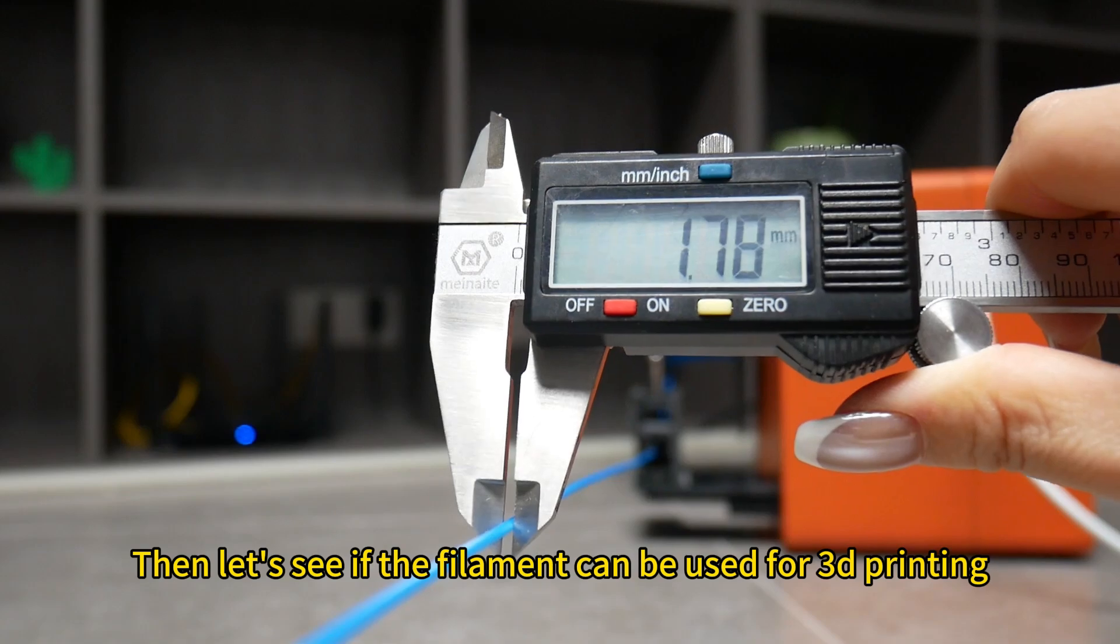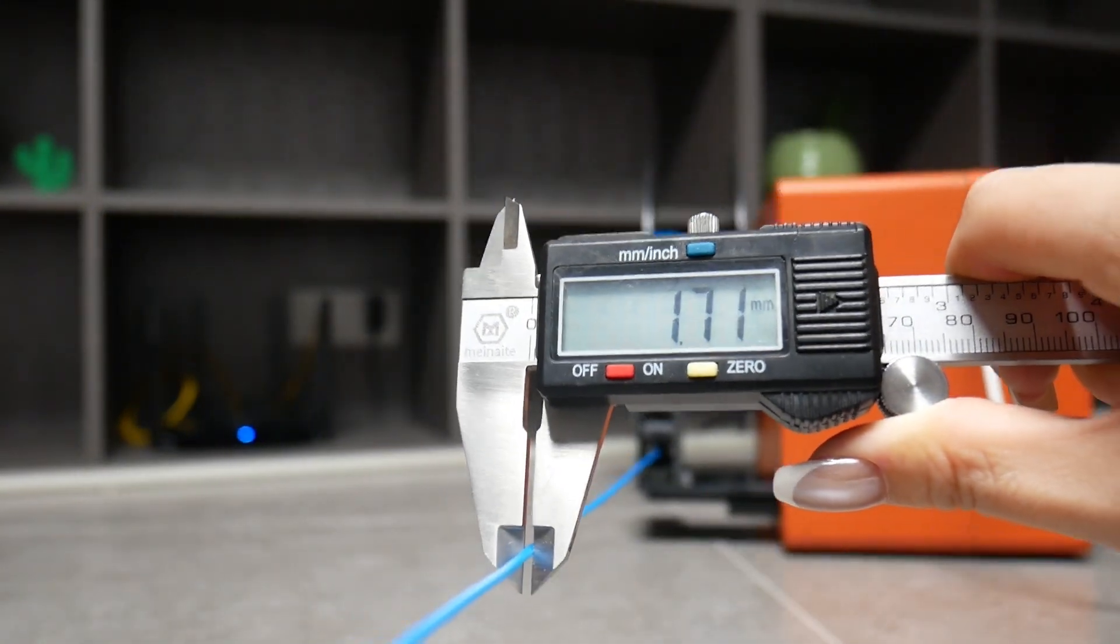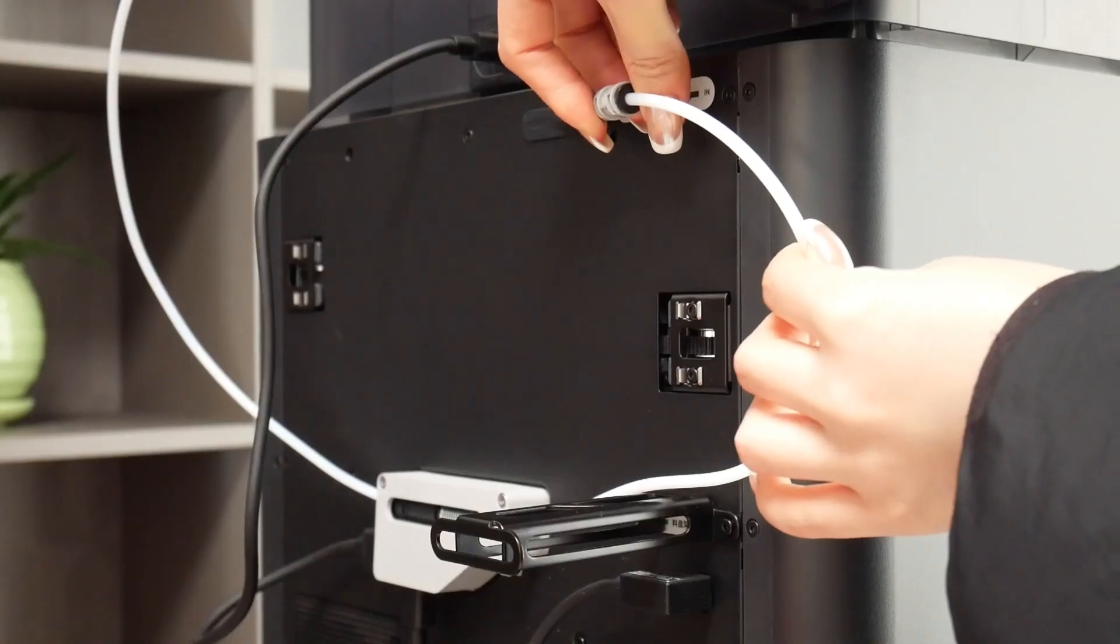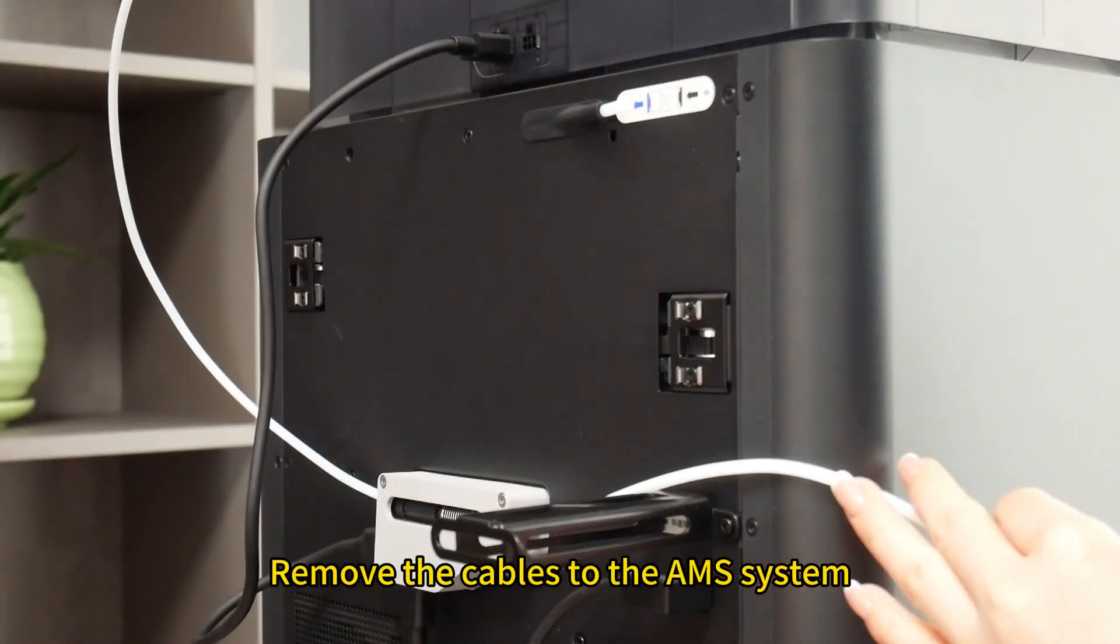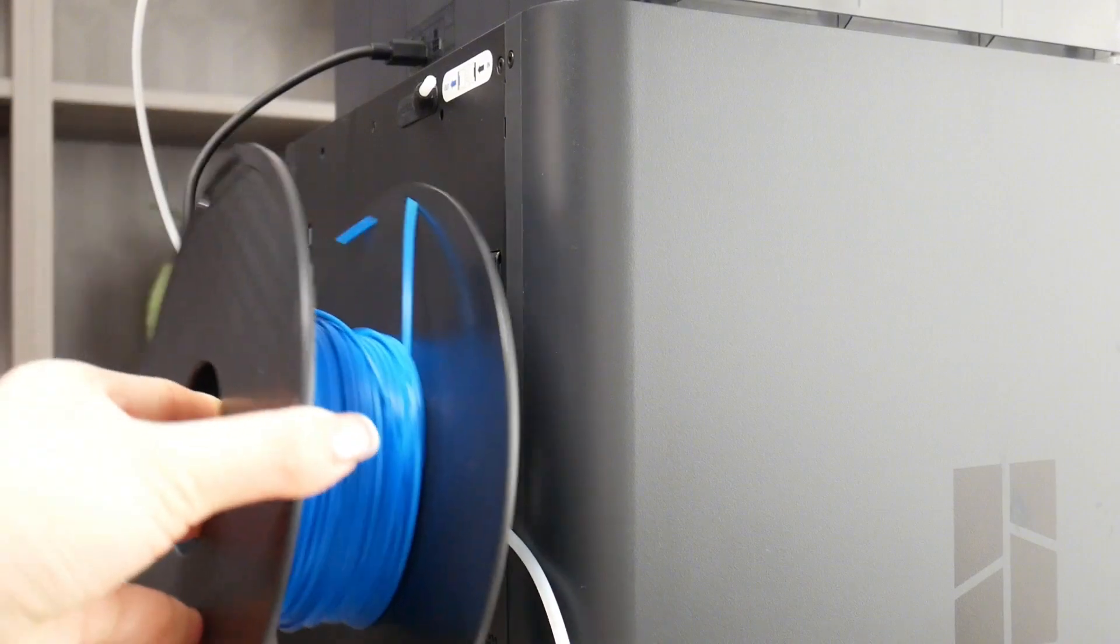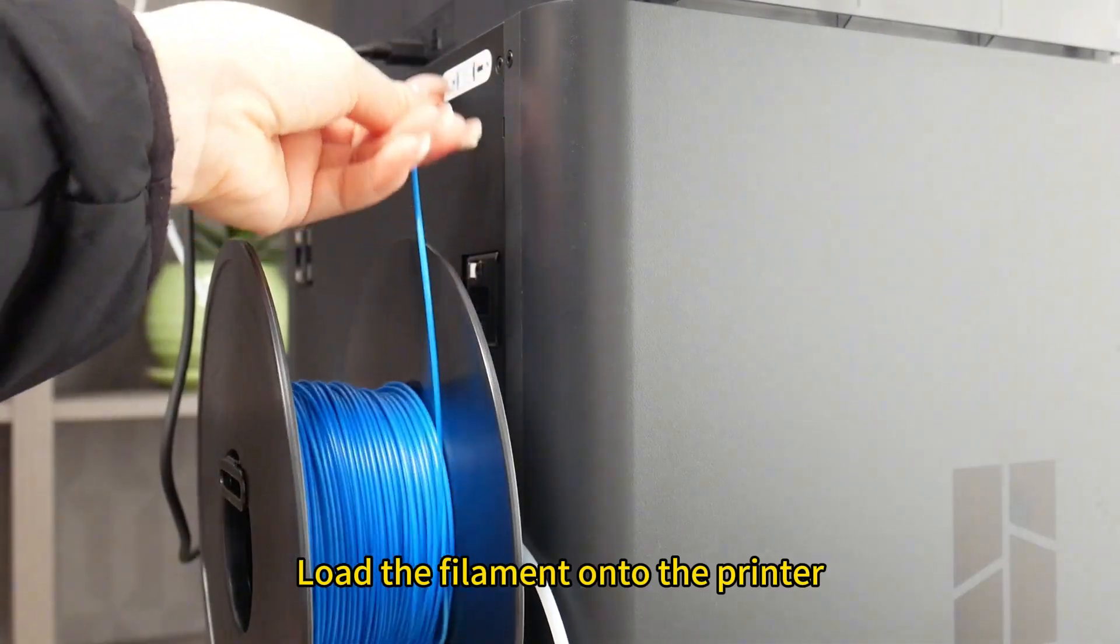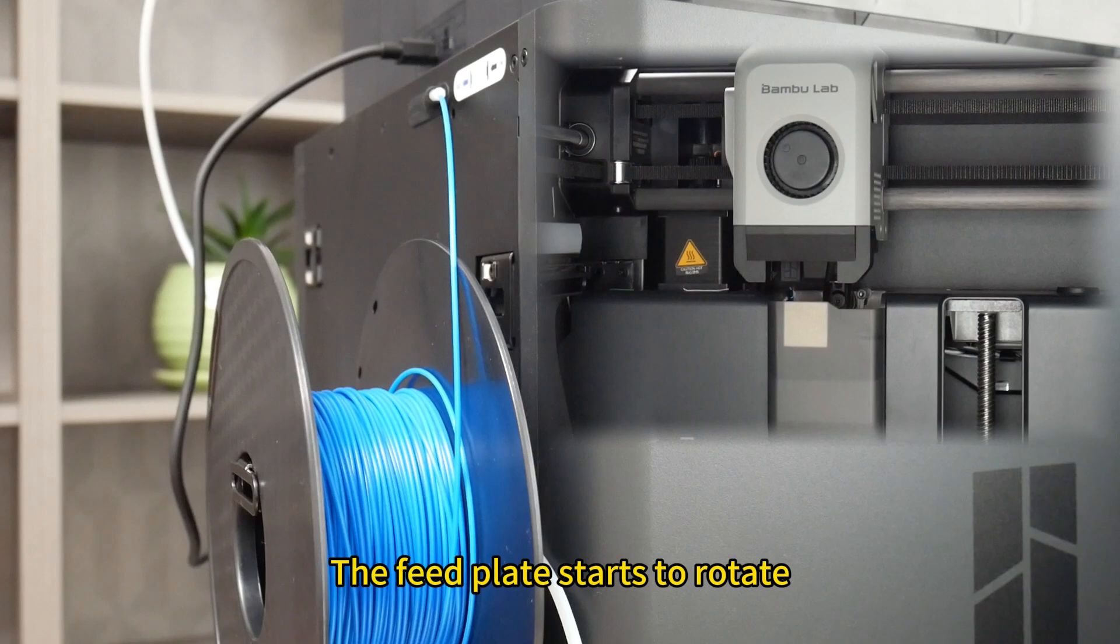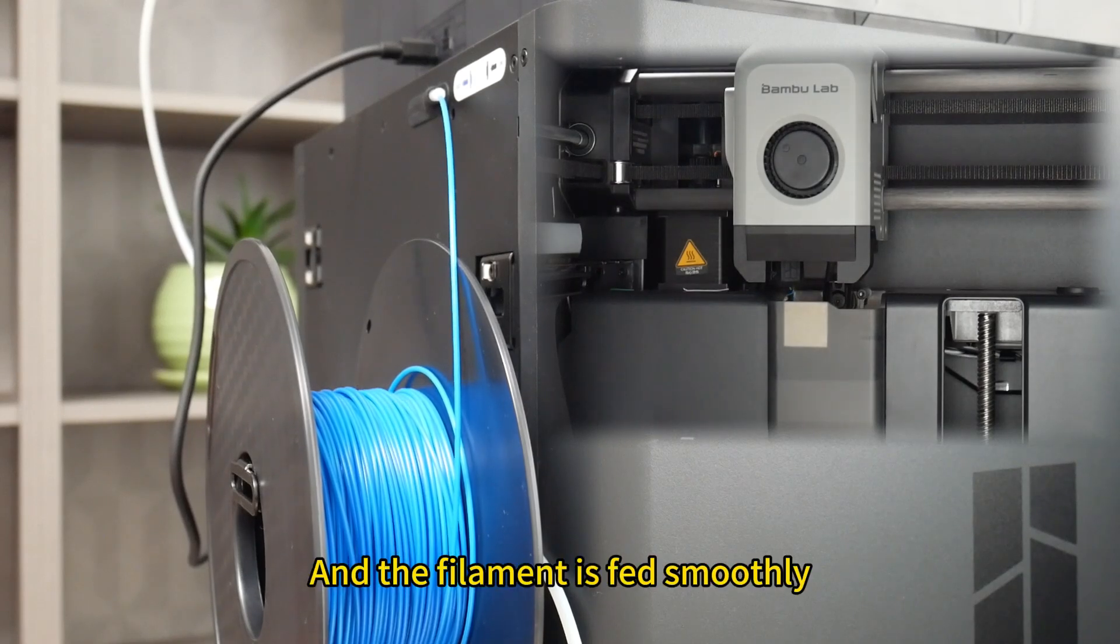Then let's see if the filament can be used for 3D printing. The 3D printer we use is Bambulab P1S. Remove the cables to the AMS system. Load the filament onto the printer. The feed plate starts to rotate, and the filament is fed smoothly.